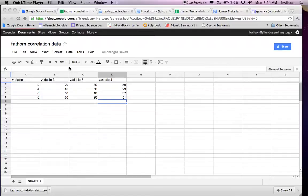Hello, in this screencast I'm going to show you how to download data from Google Spreadsheet and put it into Fathom and test or calculate the correlation between two variables. So we're in Google Spreadsheet.